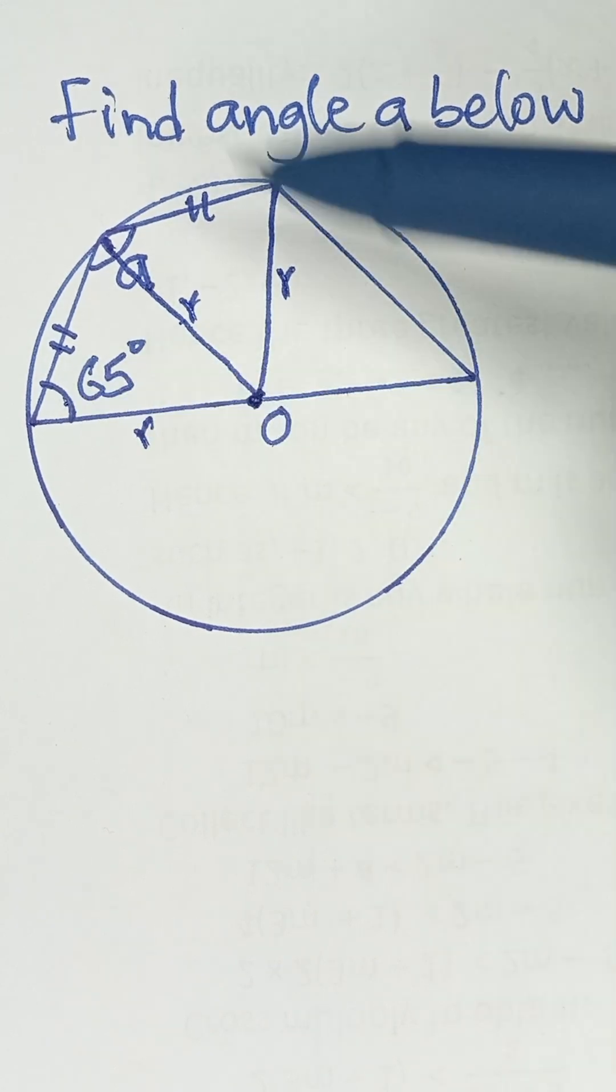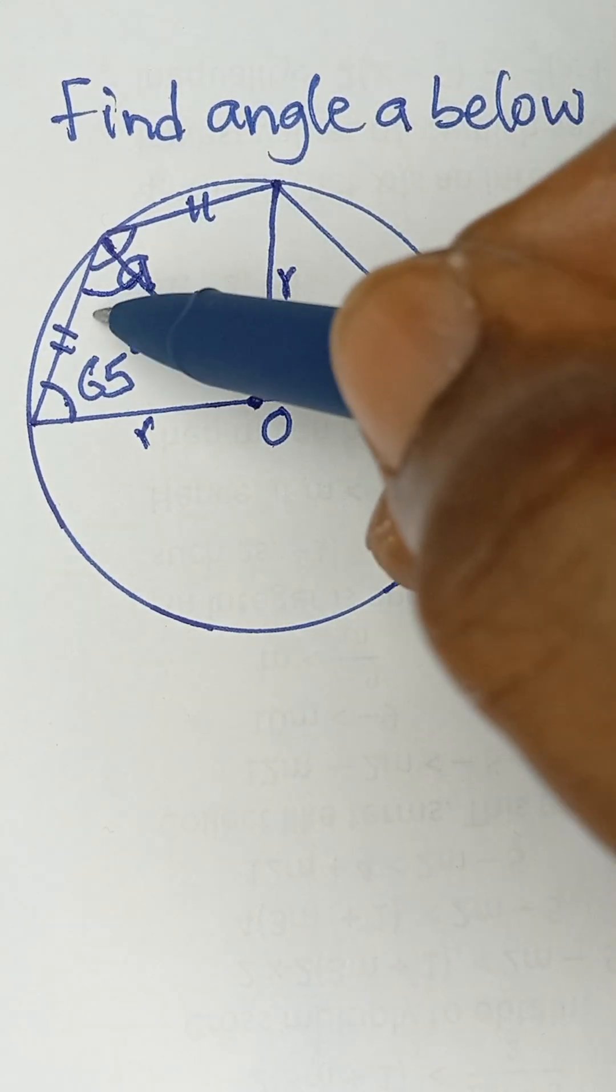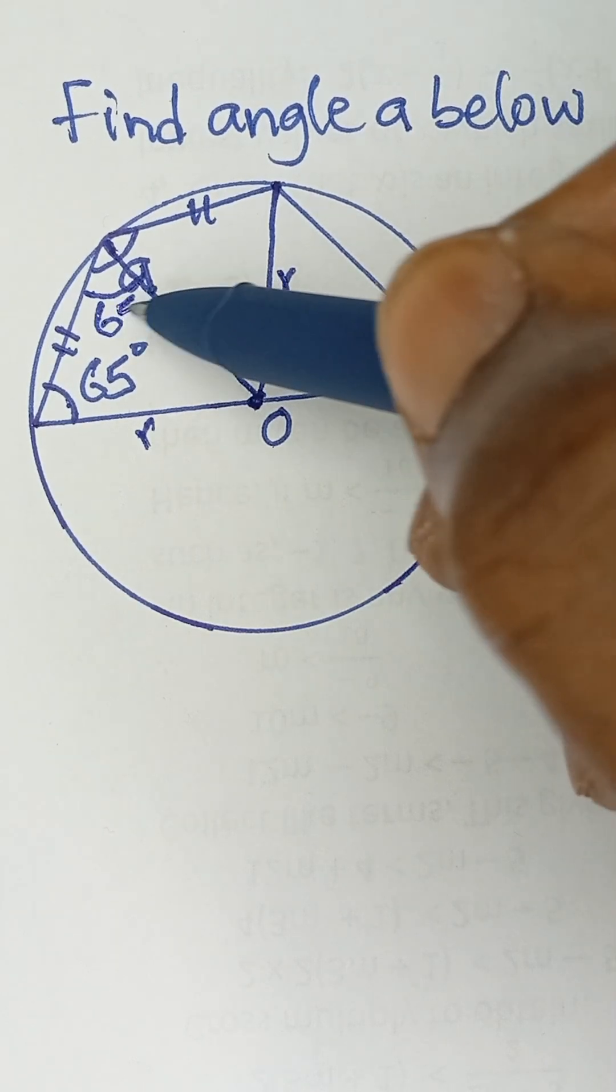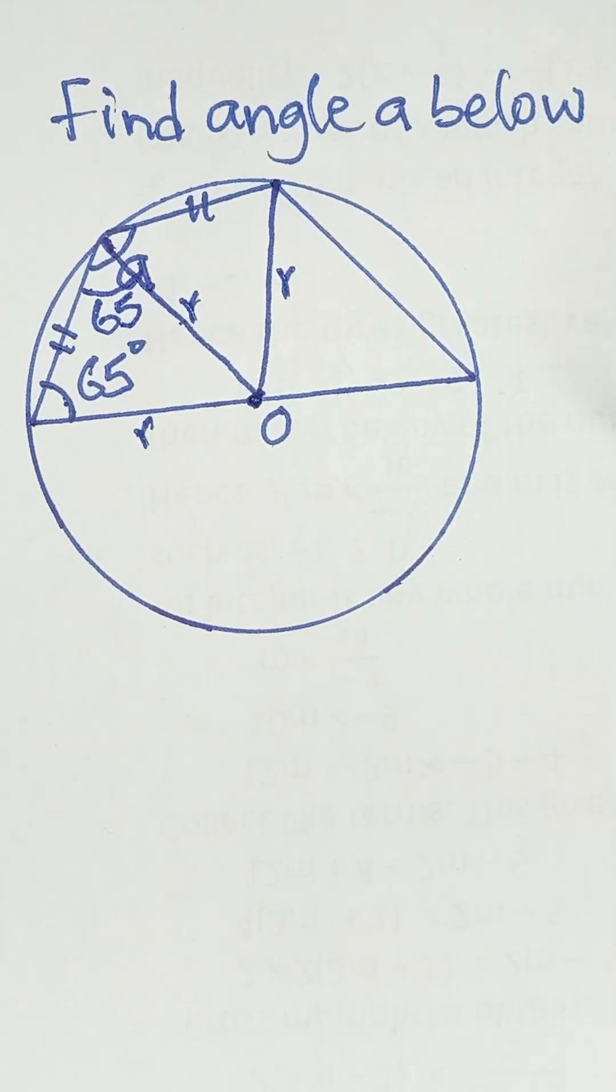So if this is 65, that means this angle here is also 65 because the base angles of an isosceles triangle are equal.